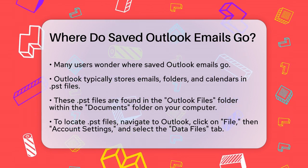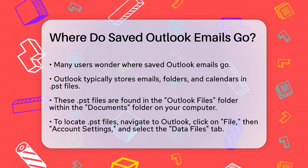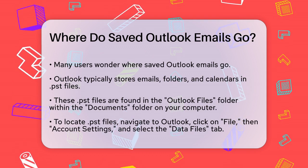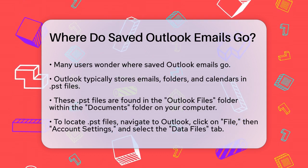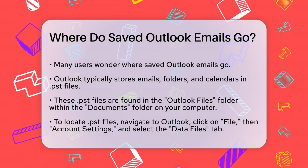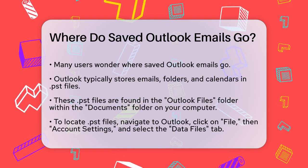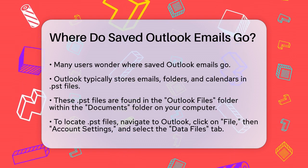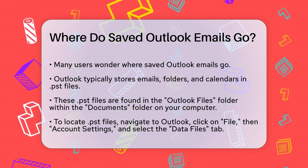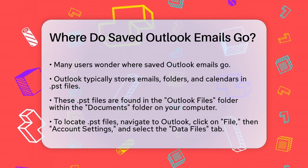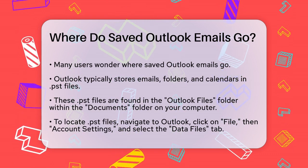To find these files, you can go into Outlook, click on File, then select Account Settings, and again Account Settings. In the Account Settings window, click on the Data Files tab, and you'll see the file names and paths of your .pst files.